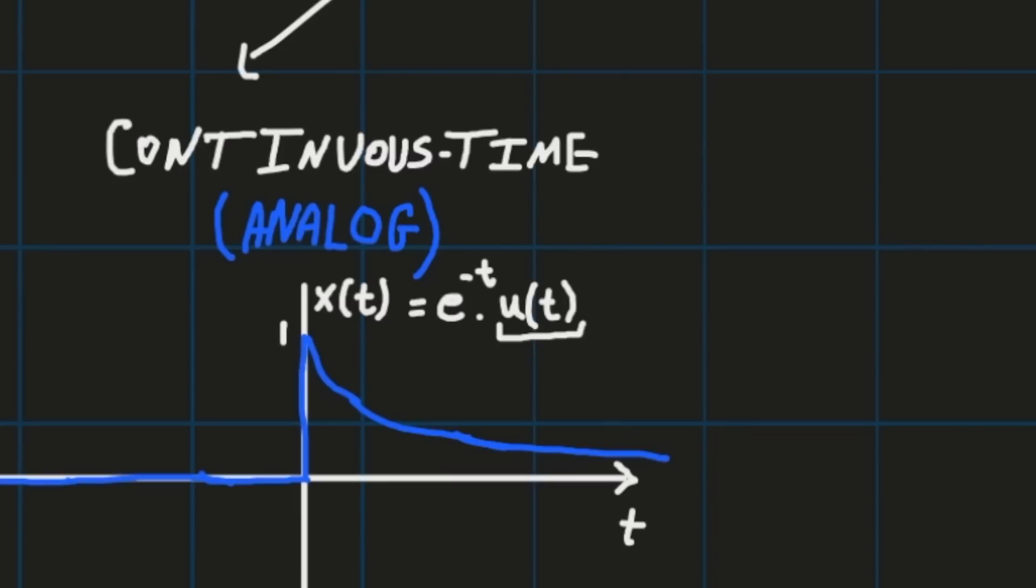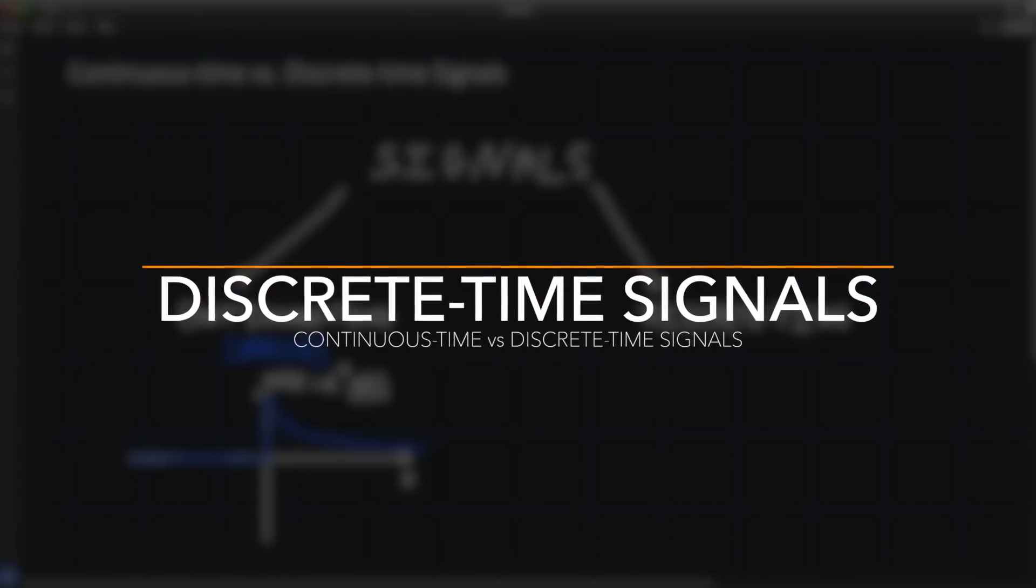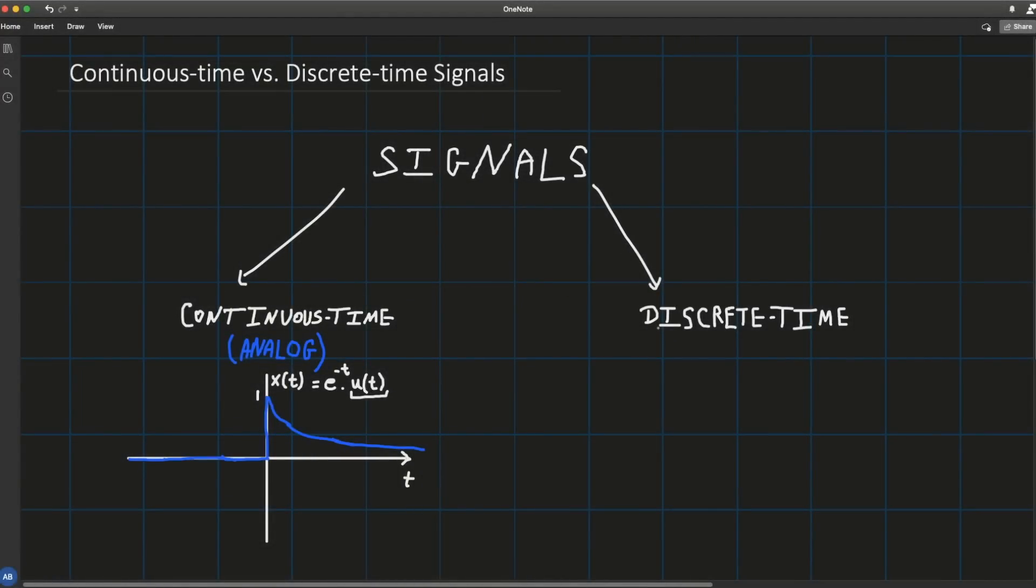Now on the other hand, discrete time signals are defined only at certain specific values of time. These time instances are not necessarily equidistant in time, so you can define a time instance that is at one second, another one that samples at three seconds, and then at ten seconds and so on.